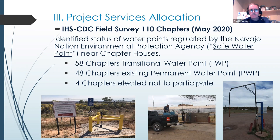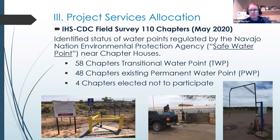We determined that 58 chapters needed a water point, so we installed 58 transitional water points. 48 had existing permanent watering points, which can come in different types of sources. Both the free water and containers are available at both sites. There were four chapters that decided not to participate in the intervention, so they've been left off.